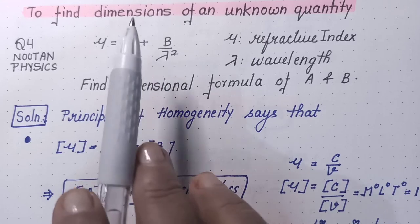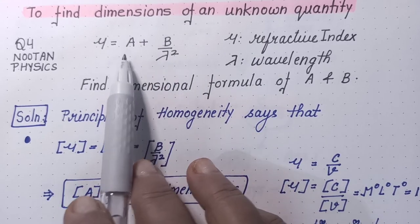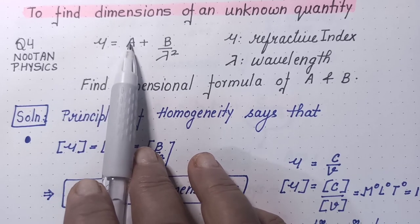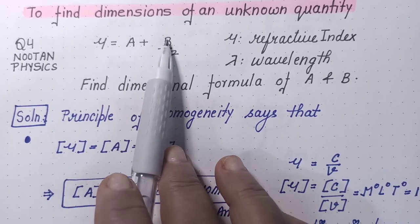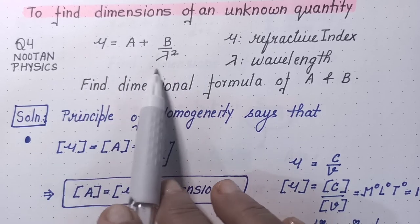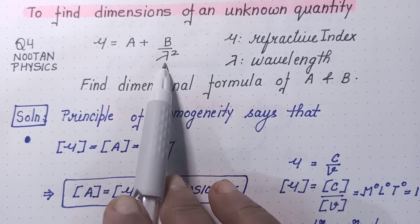So, we are starting with the first question which is very popular, very important question and that is refractive index μ is given as a constant A plus constant B upon λ square. This expression tells how refractive index of a material depends upon wavelength of light.